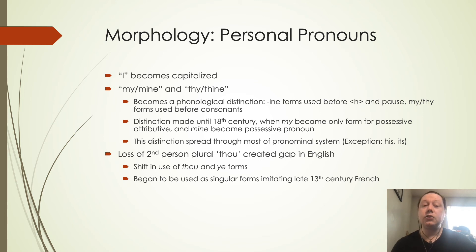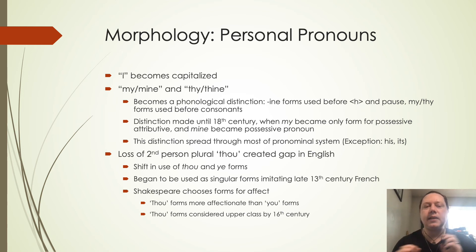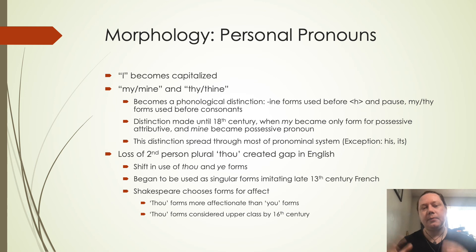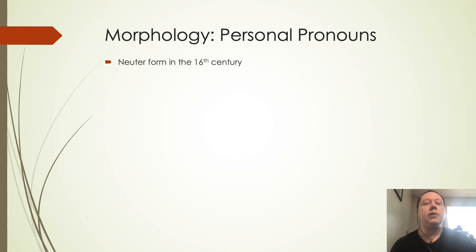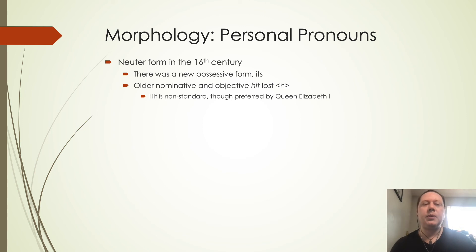Shakespeare started to use 'thou' and 'you' forms for effect — 'thou' forms are more affectionate than 'you' forms — and they eventually became more associated with upper class by the 16th century. What ends up happening is we get rid of that distinction completely, using 'you' — what was the second person plural — as both singular and plural. The neuter form in the 16th century develops into 'its' as a third person form. The older nominative and objective form 'hit' with the h is lost and considered non-standard, though we still see some people like Queen Elizabeth I using it, and we end up with just 'it' and 'its.'